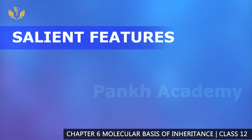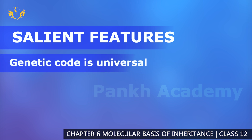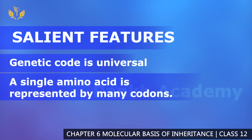Now let's move on to the salient features of the genetic code. Pay attention to these features. The first feature is that the genetic code is universal — meaning the codes remain the same across all organisms and will never change. A single amino acid can be represented by multiple codons.